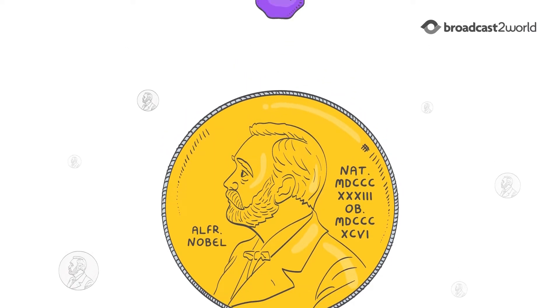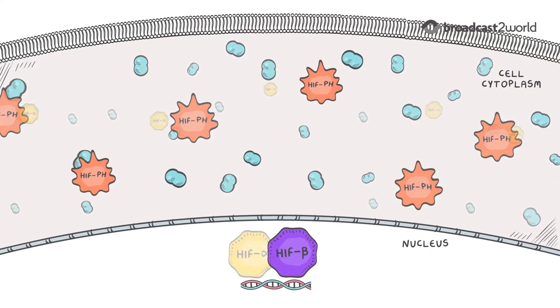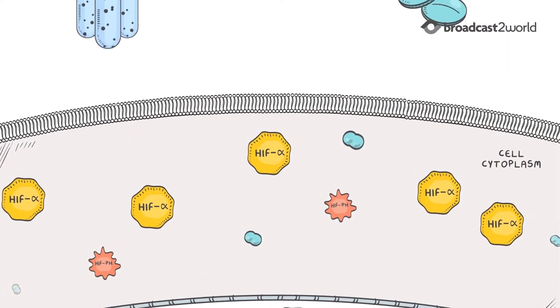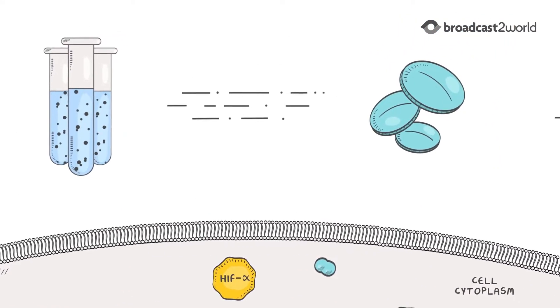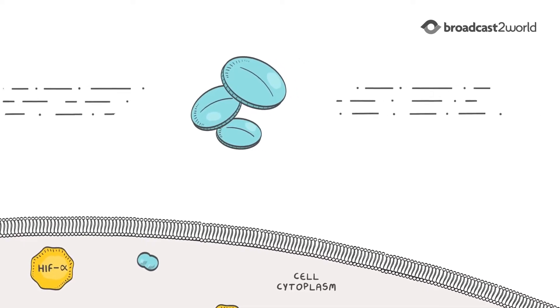Nobel Prize-winning science uncovered details of the oxygen-sensing pathway inside our cells, and this in turn has led to the development of a new class of drugs to treat anemia.